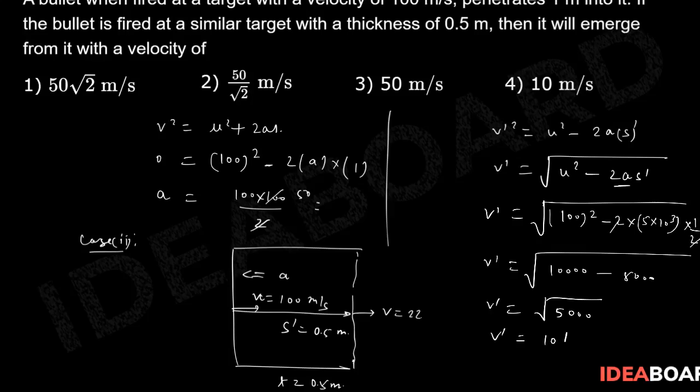So V' will be 10√50, or this will be 10 × 5√2, that means 50√2 meter per second. So it will not be 0, it will be 50√2 meter per second. Option number one is the right choice for us.